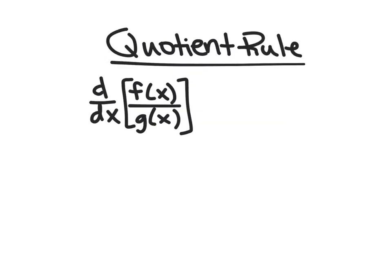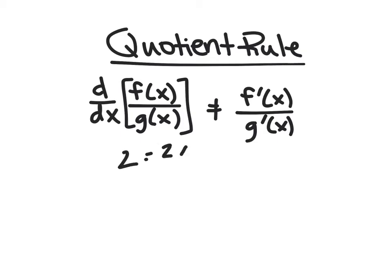The next thing to look at is the quotient rule. What's the derivative of f(x)/g(x)? It's not going to be f'(x)/g'(x) — similar to the product rule, life is not quite that easy. For example, 2 is the same as 2x/x, which has derivative 0. But that fake rule would give 2/1, and 0 is definitely not 2. So we have to do something a little more complicated.